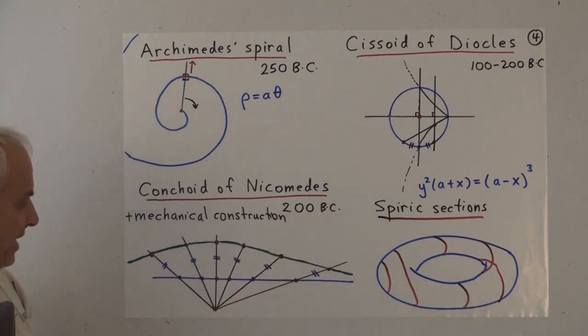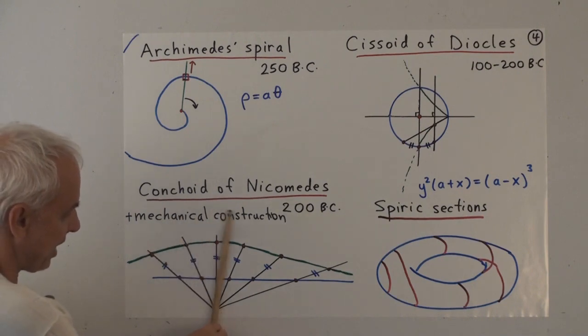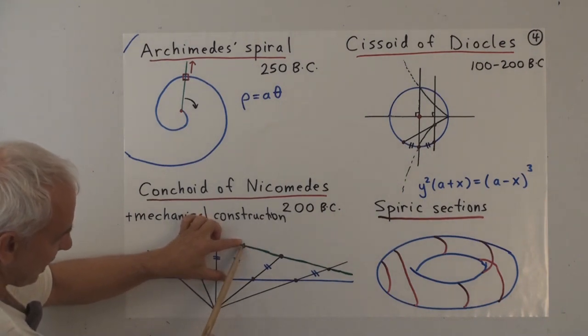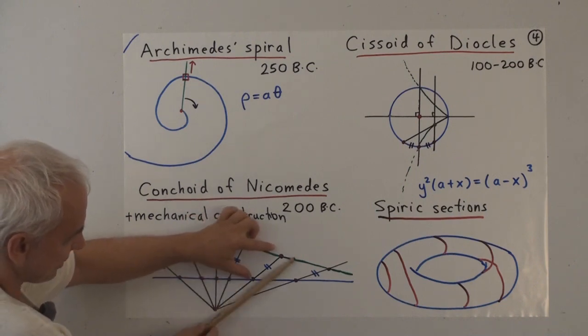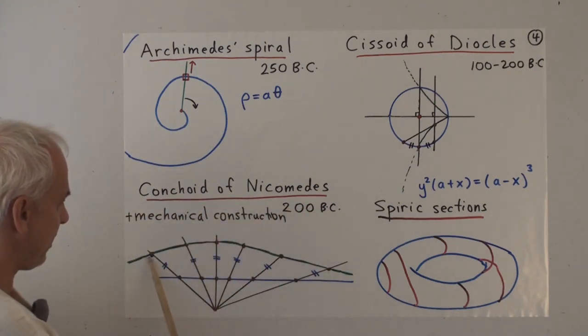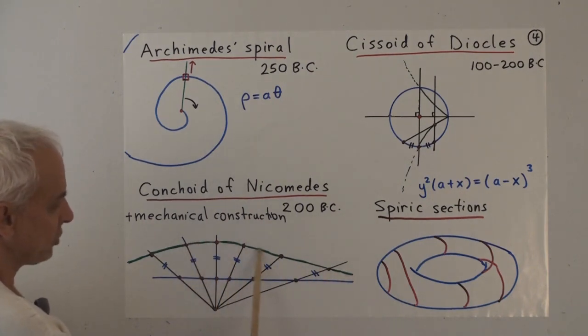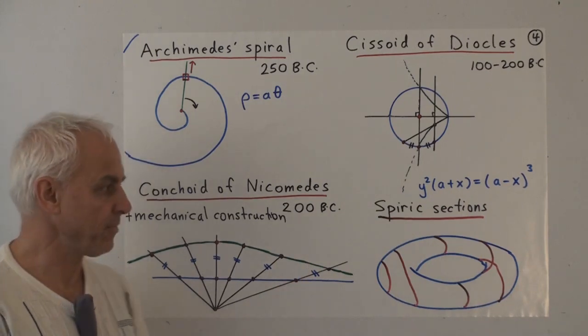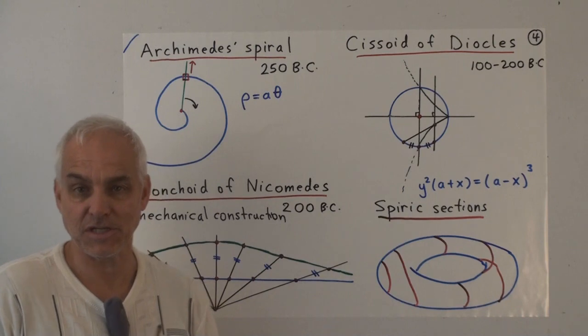Then there was the conchoid of Nicomedes, also around 200 BC. It's also something reasonably natural, also formed by lines. We have a fixed line there and a fixed point here. We're considering the various lines going through our fixed point, and we're looking at going a fixed length from the baseline on any one of these lines. These points trace out some curve which will asymptotically approach the line as we go out in that direction. I think he actually made a mechanical construction that would actually draw this thing for you.